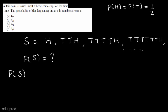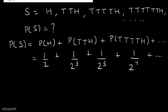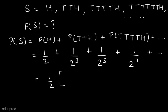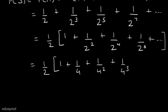We can write the probability of S as the sum of probabilities of each outcome: P(S) = 1/2 + 1/2³ + 1/2⁵ + 1/2⁷ + ... We can factor out 1/2, so inside the bracket we have 1 + 1/2² + 1/2⁴ + 1/2⁶ + ..., which equals 1/2 times the series (1 + 1/4 + 1/4² + 1/4³ + ...).